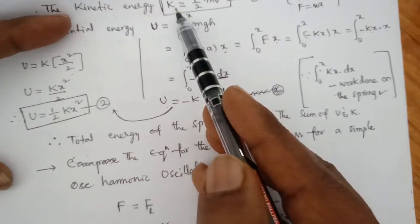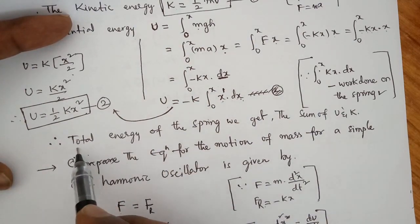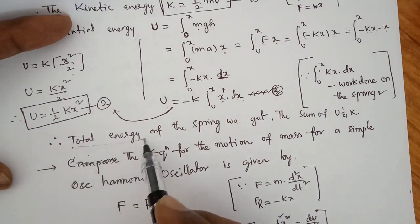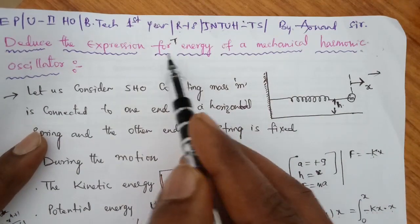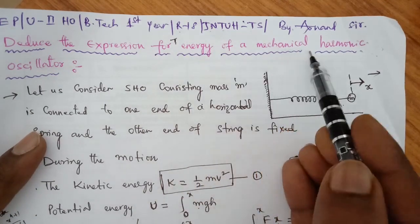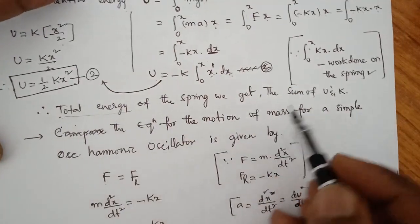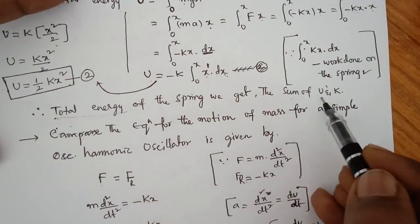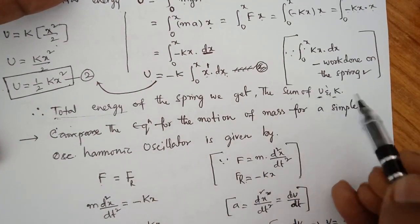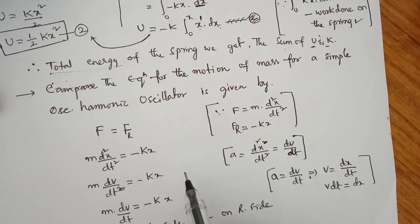So we have obtained kinetic energy and potential energy. The sum of potential energy and kinetic energy equals total energy. We need to find the total energy of a mechanical harmonic oscillator.